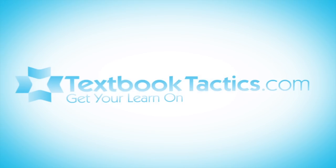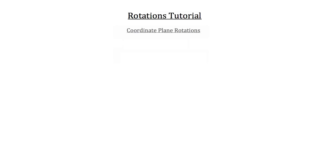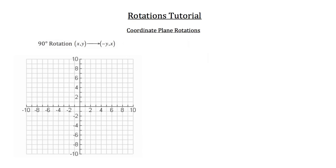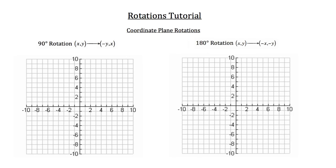This is the rotations tutorial. In geometry, when we discuss rotations, what we're typically discussing is rotations inside the coordinate plane, and there are two types of rotations that are common at this level of geometry. The first is a 90 degree rotation, and the second is a 180 degree rotation.